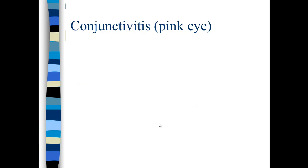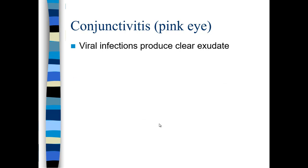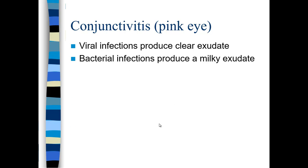The first disease we're going to talk about is pink eye or conjunctivitis. It's very contagious and usually self-limiting because individuals with pink eye are excluded from class activities. You see it more in children because they have a lifestyle that's more communicable — they're touching each other and may not have good hand-washing practices. The viral infection produces a clear, colorless, translucent exudate, while bacterial infections produce a milky, opaque exudate. You can use that difference for a rough differential diagnosis.